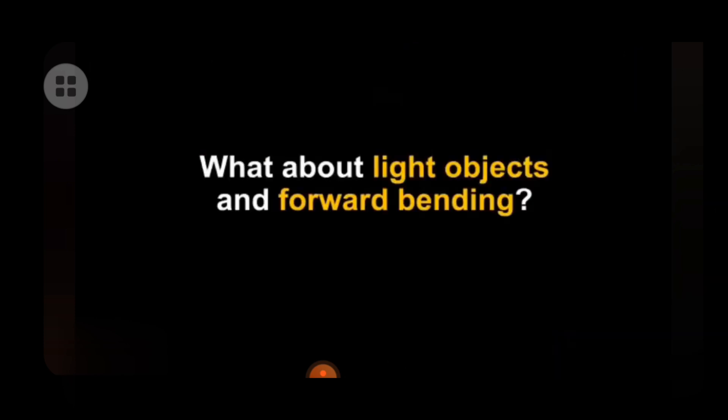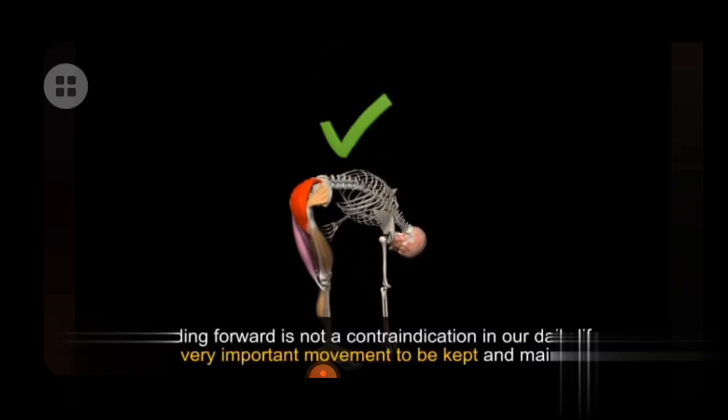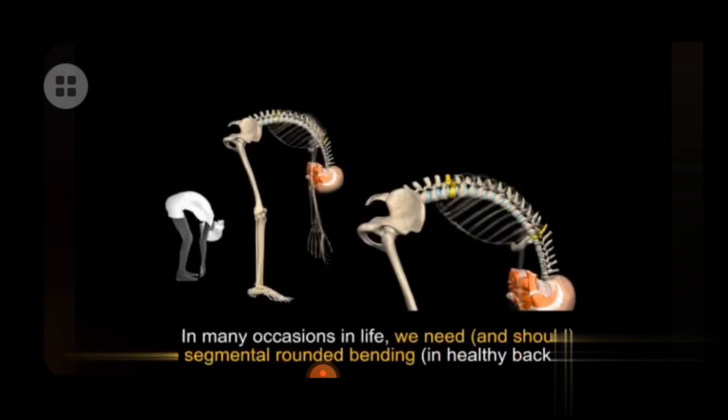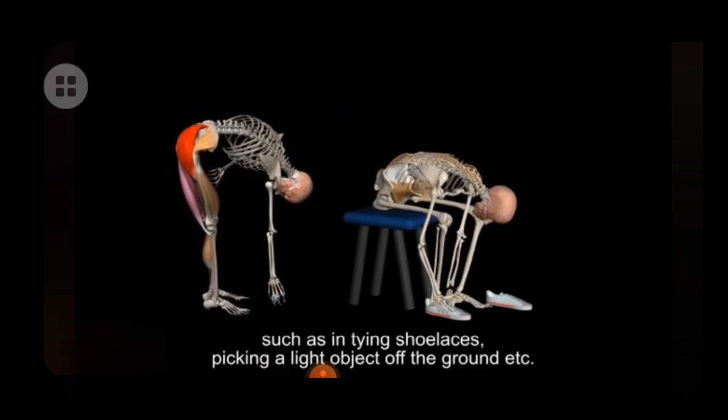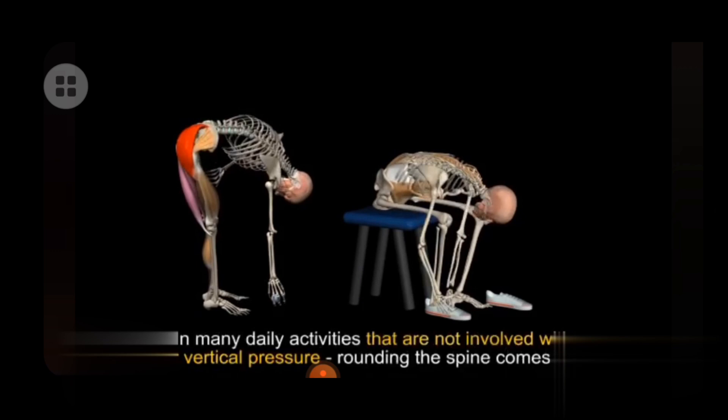What about light objects and forward bending? Bending forward is not a contraindication in our daily life. It is a very important movement to be kept and maintained. In many occasions in life, we need and should use segmental rounded bending in healthy back cases, such as in tying shoes, picking a light object off the ground. In many daily activities that are not involved with higher vertical pressure, rounding the spine comes naturally.